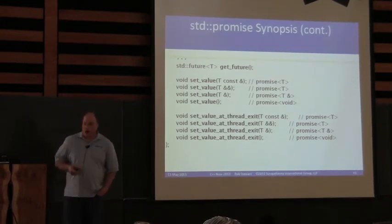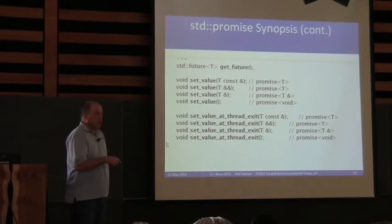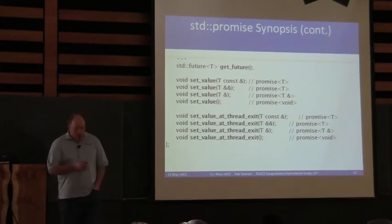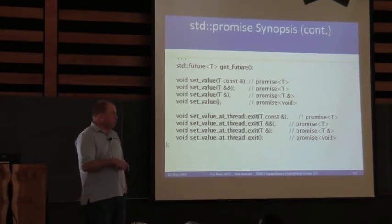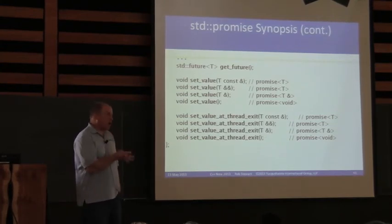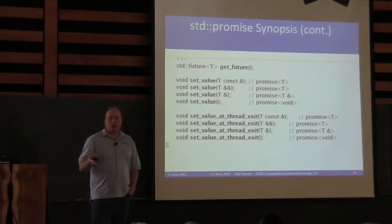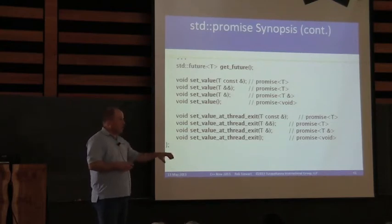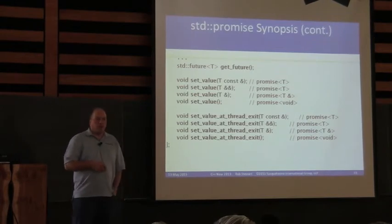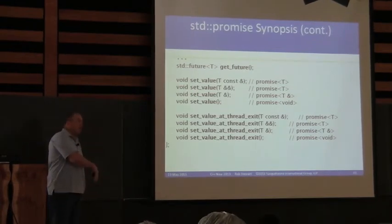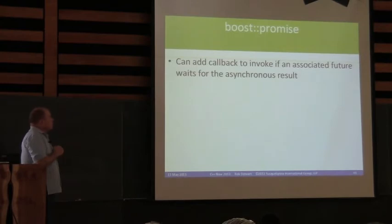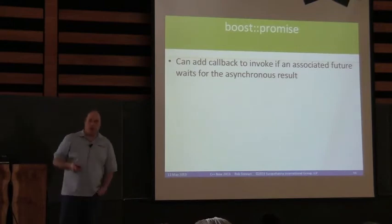I just realized I'm missing set_exception and set_exception_at_thread_exit — they take an exception_ptr. You call set_exception and give it a std::exception_ptr, which you can get by calling std::current_exception, or std::copy_exception if you want to create your own exception instance and copy it. That'll be saved in the shared state, and when you call get on the future, it'll be re-raised at that point.